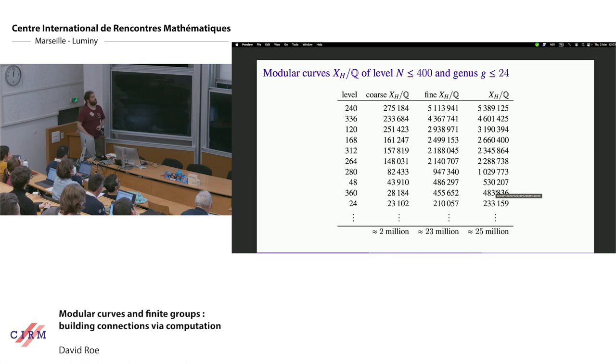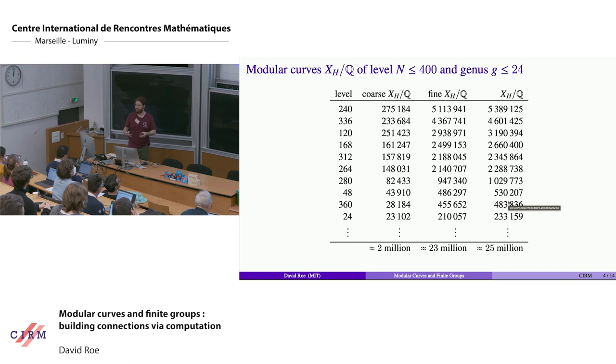I want to give you an idea of the scale of data that we want to have. Currently the database includes modular curves of level up to 70 that are defined over Q. We're going to divide those into two parts: the curves that contain minus one and the curves corresponding to subgroups of GL2 Z hat that don't contain minus one. Our goal over the next several months is to expand the database to curves of level up to 400, but that's far too many curves. So we're going to now restrict to genus up to 24. Here you can see about how many that is: 25 million modular curves.